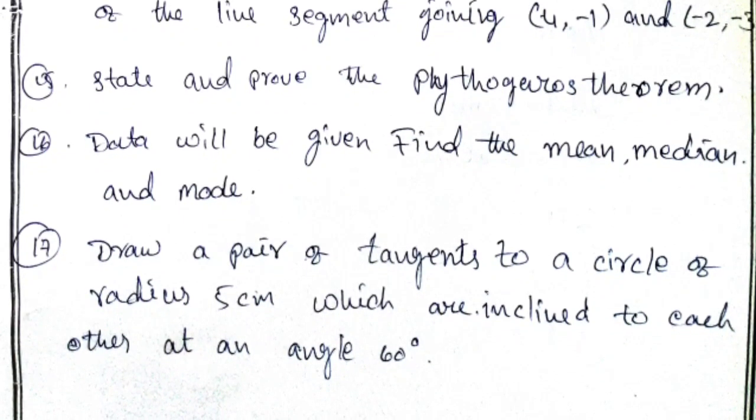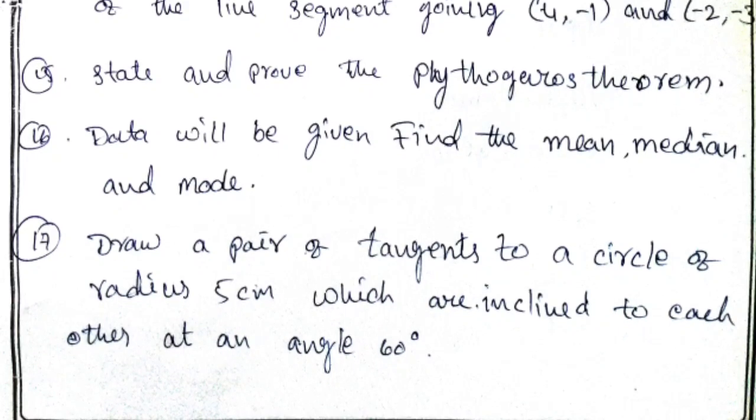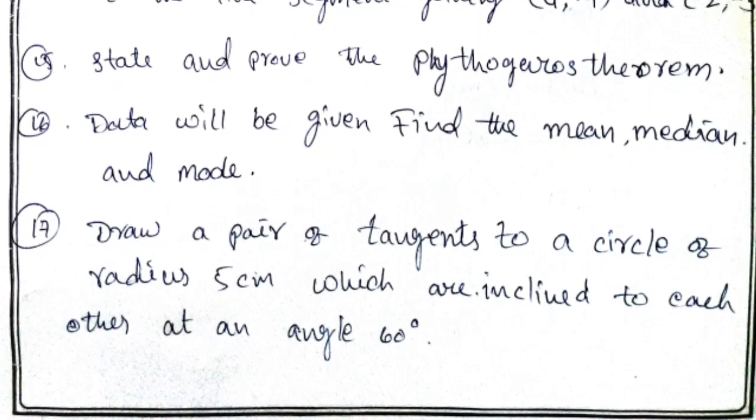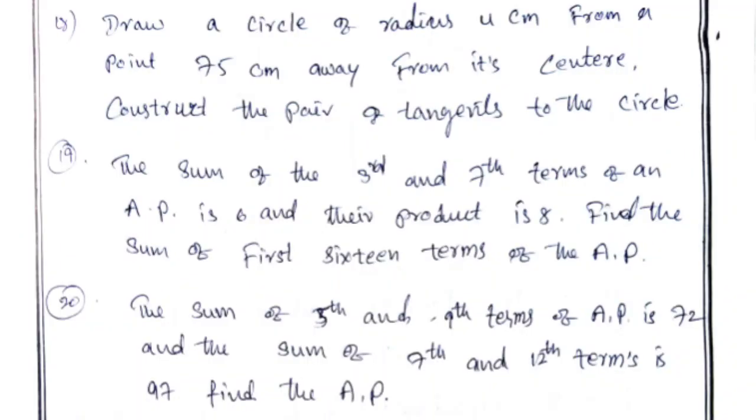Tangents should make an angle 60 degrees. If you draw the tangents, direct tangents. These two questions are the two model questions of the construction. Drawing the tangents and secants, important.